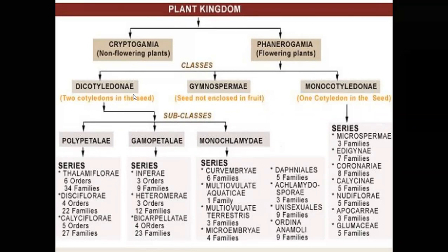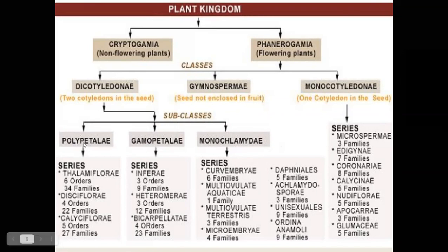The dicotyledone class is classified into three subclasses based on the arrangement of the perianth: polypetale, gamopetale, and monochlamidae. Polypetale has two chlamydes — the outer perianth is the calyx and the inner perianth is the corolla — and the corolla petals are free in position, not fused.